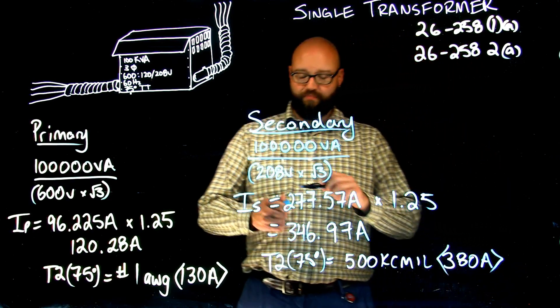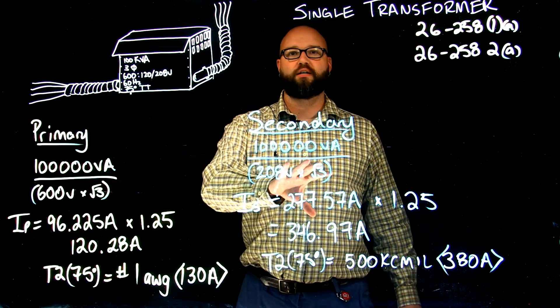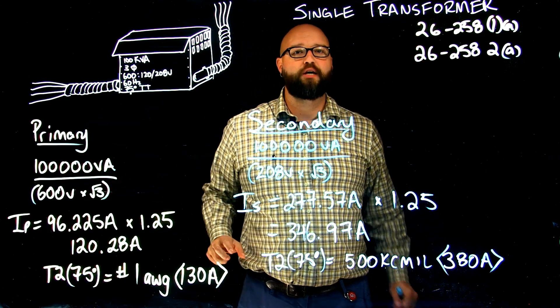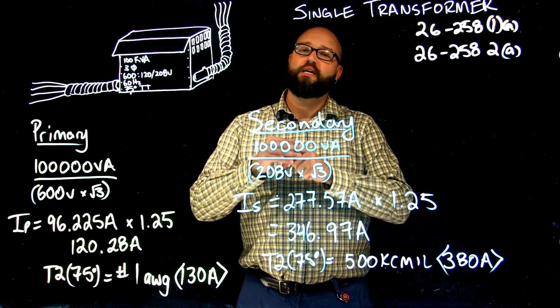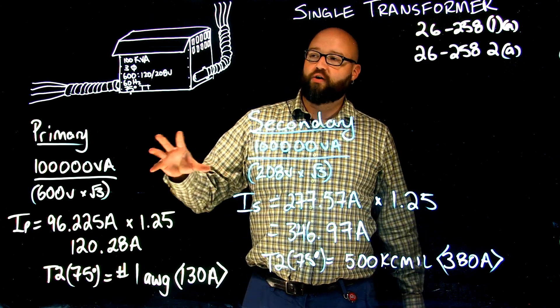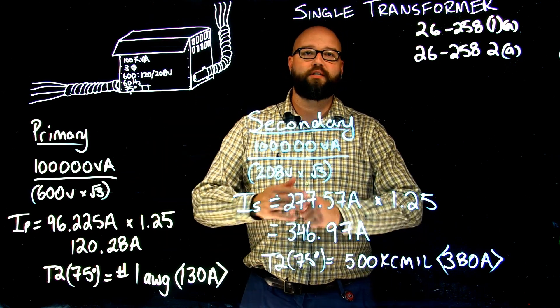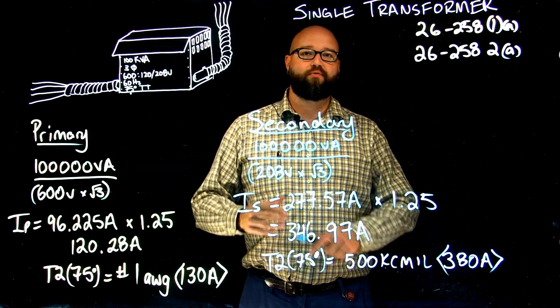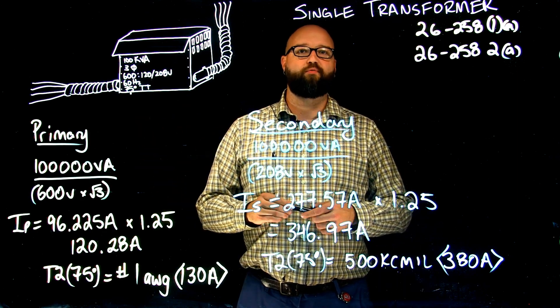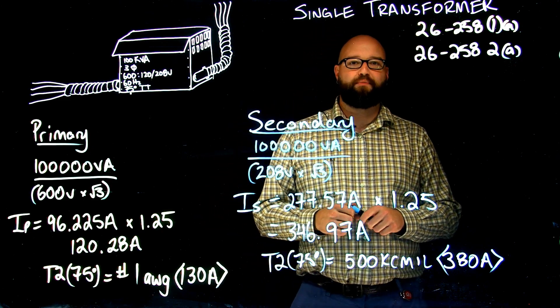So we've calculated the primary conductor for the transformer, the secondary conductor for the transformer. Hopefully this helps. Next time what we'll do is take a look at calculating the conductors for the primary side of a transformer when we have multiple transformers or parallel transformers coming off of one single feed. We'll see you next time. Thanks for watching.